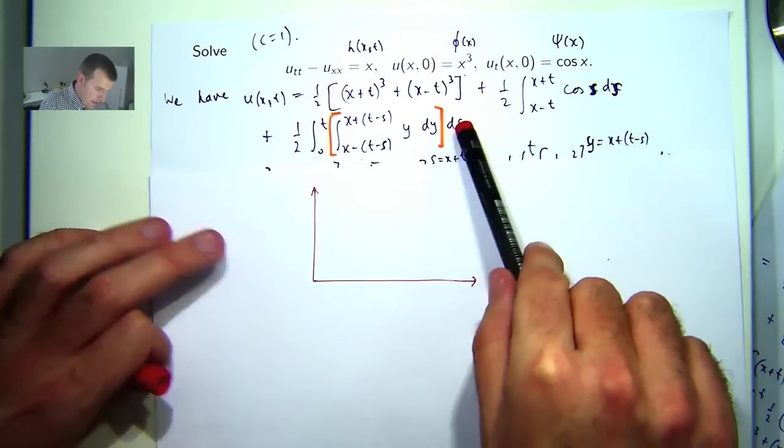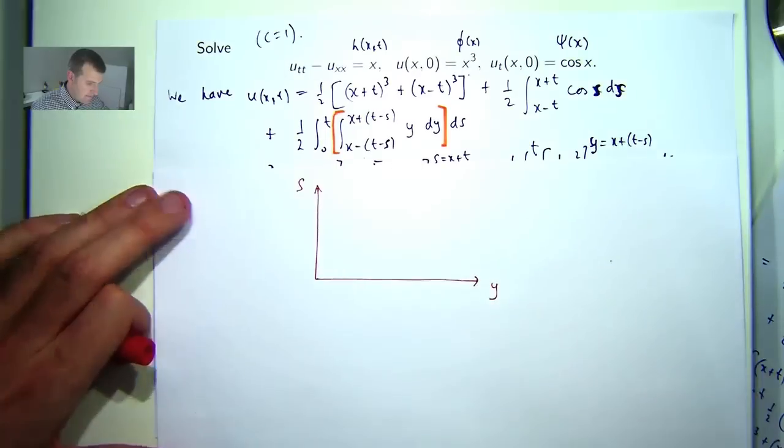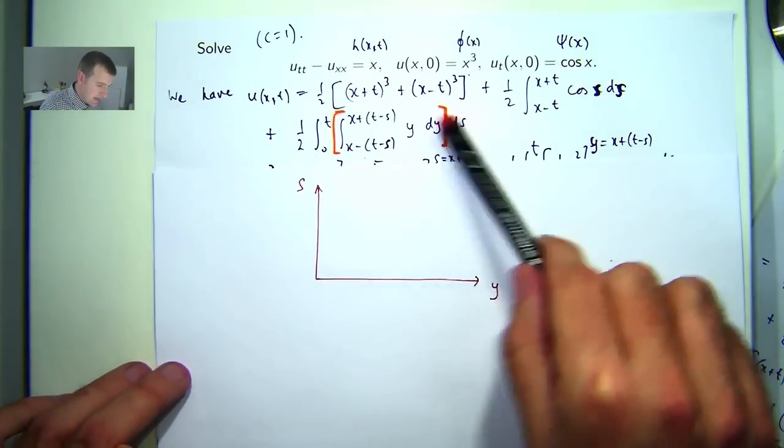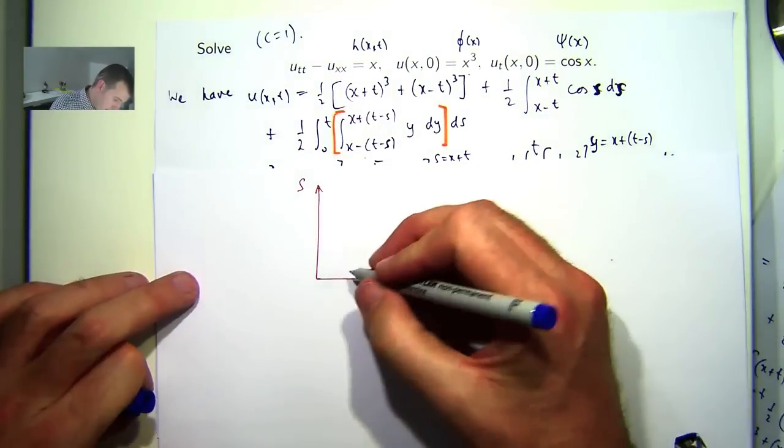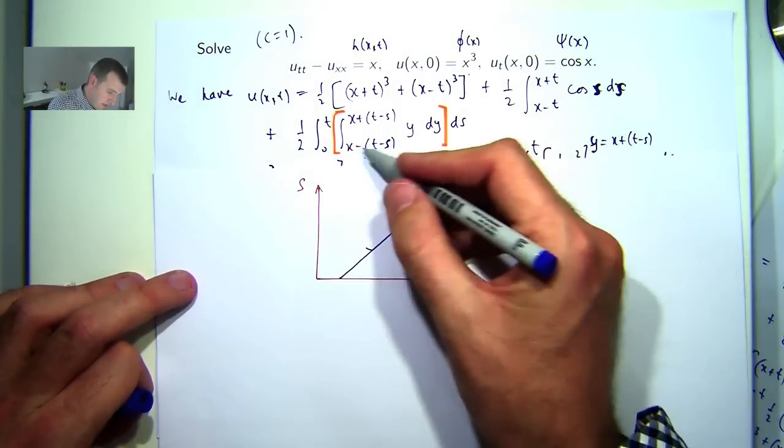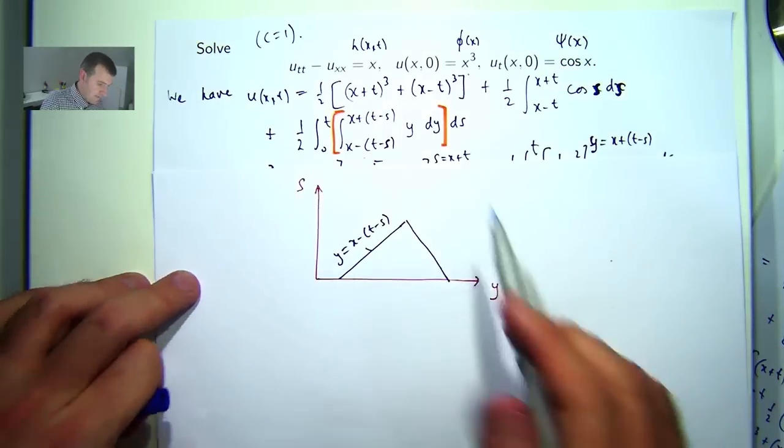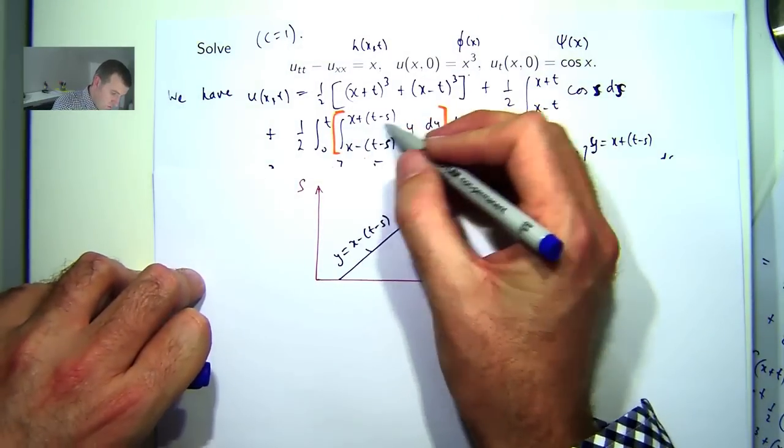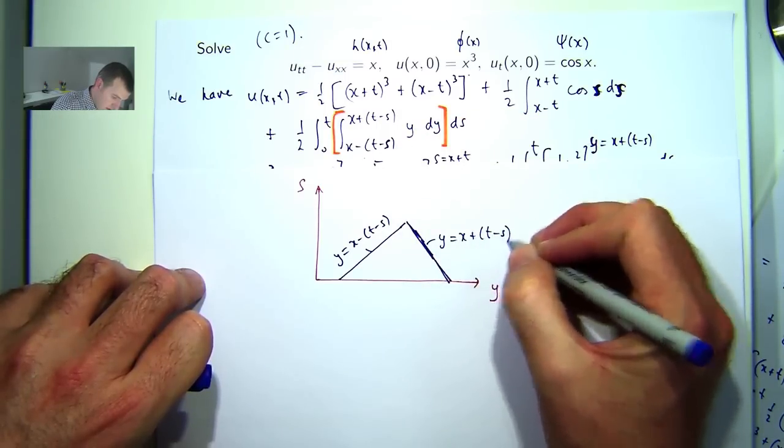Now, we are integrating here in the ys plane. Okay? And y is between this line and this line, and s is between this and this. Okay? So, think of this as the line y equals this. Okay? And think, think of this as the line y equals the top limit of integration. Okay?